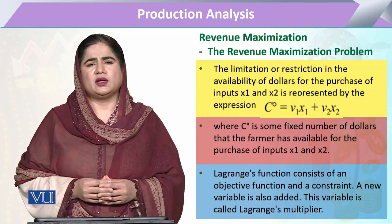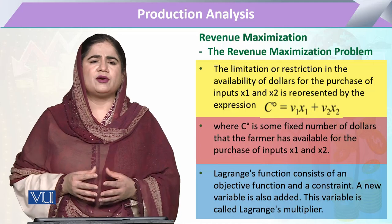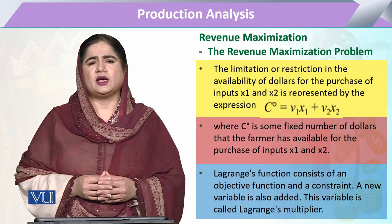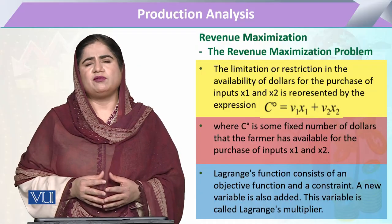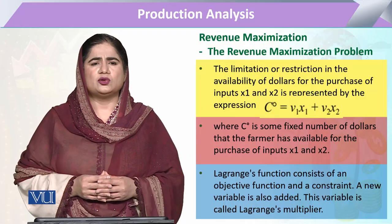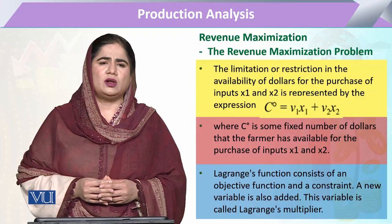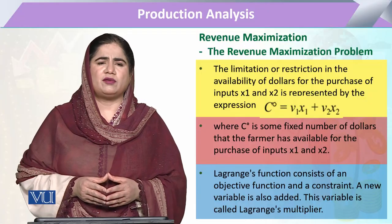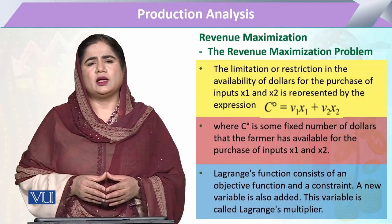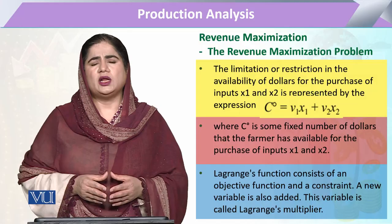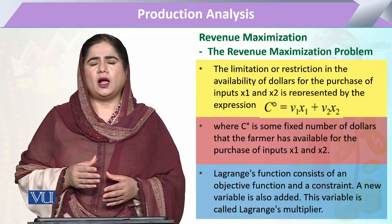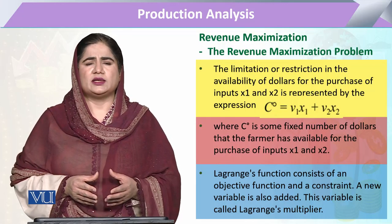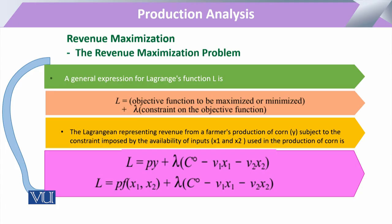We have taken the help of the Lagrange method, in which we previously saw that there is a component with an objective function and a constraint. In this revenue maximization problem, revenue maximization serves as the objective function, and the available resources — the cost in the form of wage prices or input prices multiplied by the quantity of input — will serve as the constraint. Now coming to this Lagrange, we will see how it has to be solved.